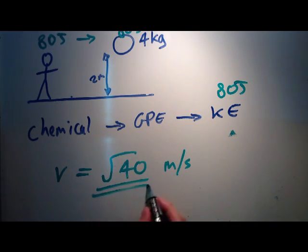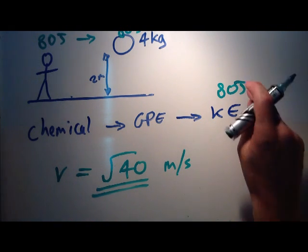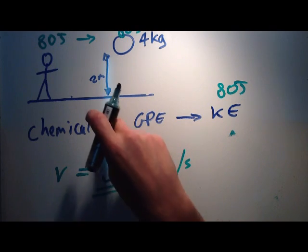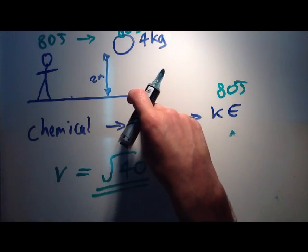And that's how we use the formula for kinetic energy to find the velocity of an object, or the maximum velocity. In reality, it would be lower because some energy will have been lost every time energy is transferred from one form into another.